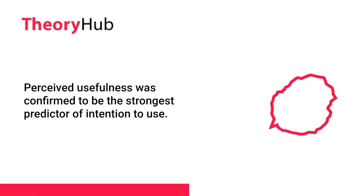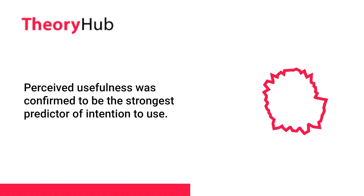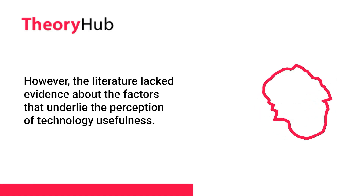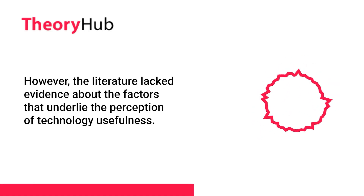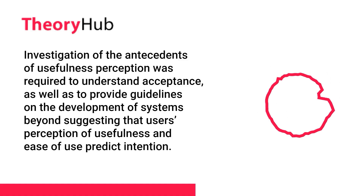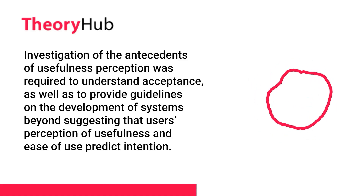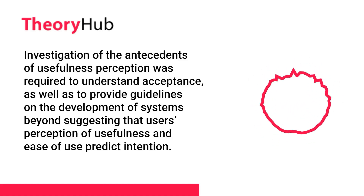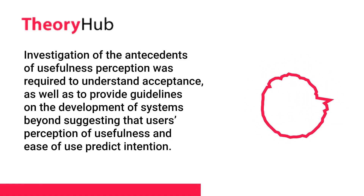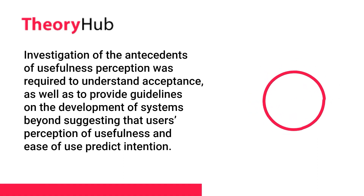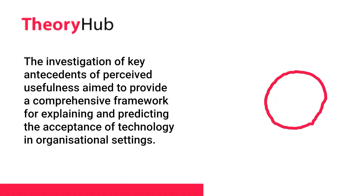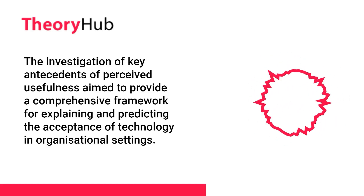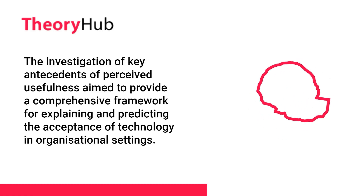Perceived usefulness was confirmed to be the strongest predictor of intention to use. However, the literature lacked evidence about the factors that underlie the perception of technology usefulness. Investigation of the antecedents of usefulness perception was required to understand acceptance, as well as to provide guidelines on the development of systems beyond suggesting that users' perception of usefulness and ease of use predict intention. The investigation of key antecedents of perceived usefulness aimed to provide a comprehensive framework for explaining and predicting the acceptance of technology in organizational settings.